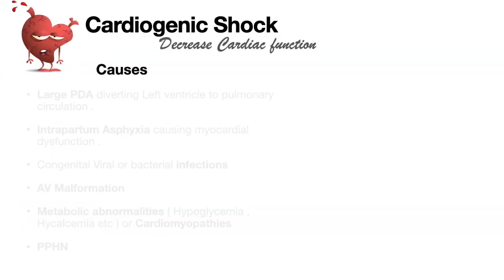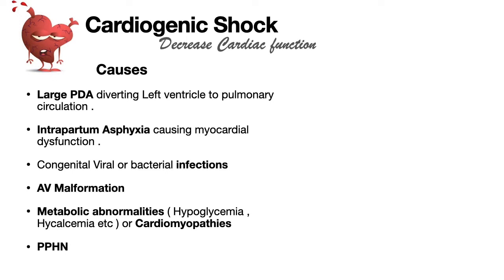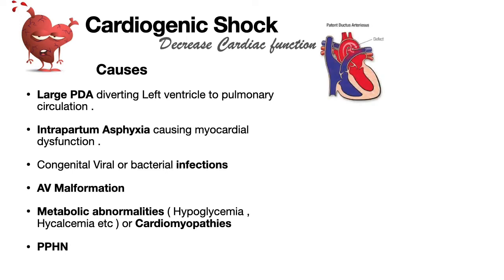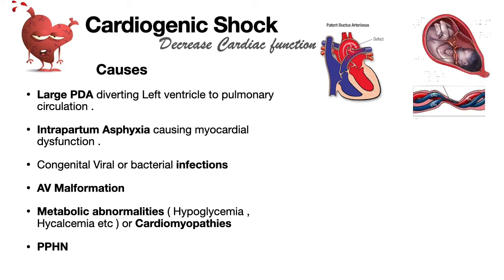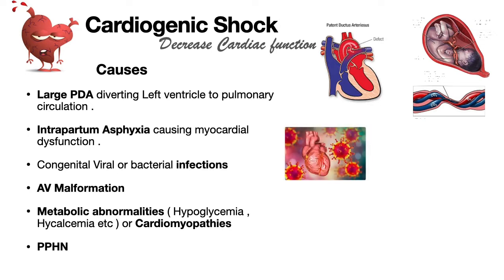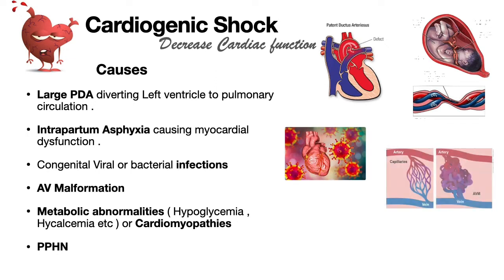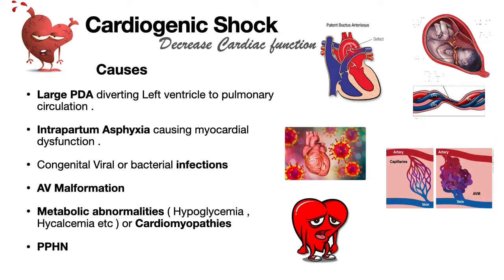The third type is cardiogenic shock, which occurs due to large PDA diverting left ventricular blood away from the body into the pulmonary circulation, intrapartum asphyxia causing myocardial dysfunction, congenital viral or bacterial infections, congenital malformations such as AV malformations, metabolic disturbances such as hypoglycemia, hypocalcemia, cardiomyopathies, and PPHN — persistent pulmonary hypertension.